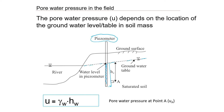This assumption may not be completely true — there are still air bubbles trapped in the groundwater, so it may not be 100% saturated. However, to simplify most problems we make this assumption. To calculate pore water pressure at point A, we need the distance from point A to the groundwater table, denoted hw. The pore water pressure equals the unit weight of water, 9.81 kN/m³, multiplied by hw.